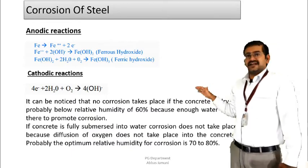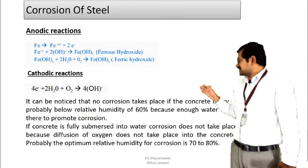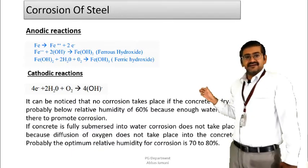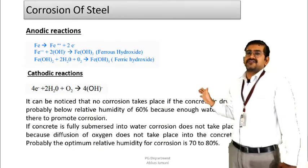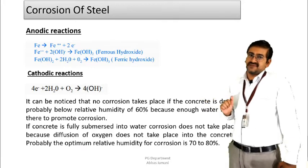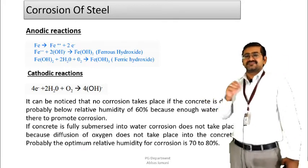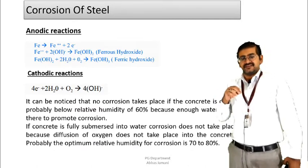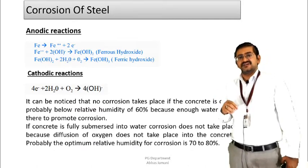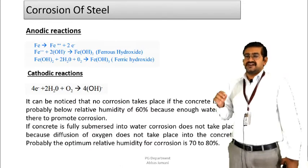Along with that, if we look at the cathodic reaction, in this particular case four hydroxyl ions are going to remain as a by-product. As we have seen earlier, in the process of carbonation or other processes, the hydroxyl ions are consumed, and as a result the pH value is reduced.